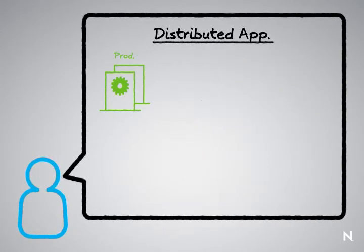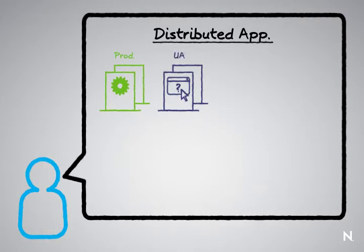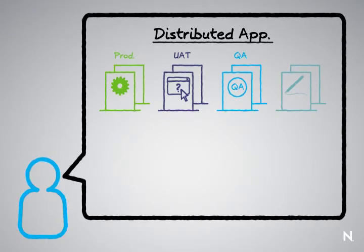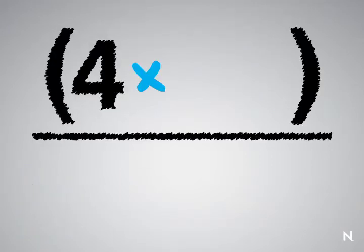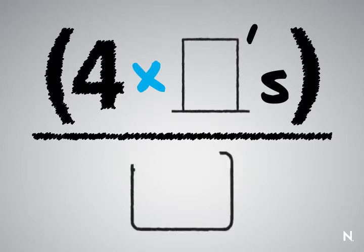In our example here, we have two servers focused at user acceptance testing, two servers focused at quality assurance, and two additional servers for development. So when we start looking at it in a distributed environment, you easily triple or quadruple the number of servers for a single application. Now think about a customer's environment — it's not just one application, it's a whole bunch of applications providing the business IT service. So we're talking hundreds, maybe thousands of servers supporting the business.